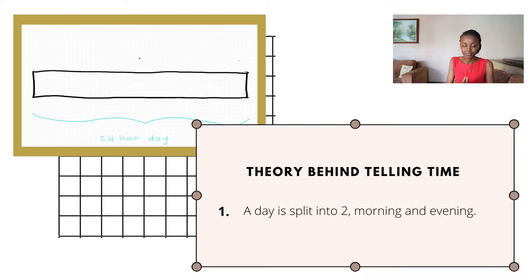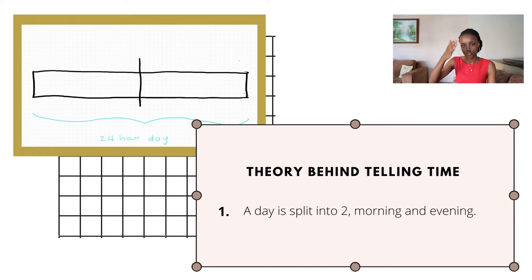The first fact they need to know is that a day is split into two: the morning and the evening. On your visual aid, you can draw a line running right through your shape to illustrate a day being split into two equal parts.